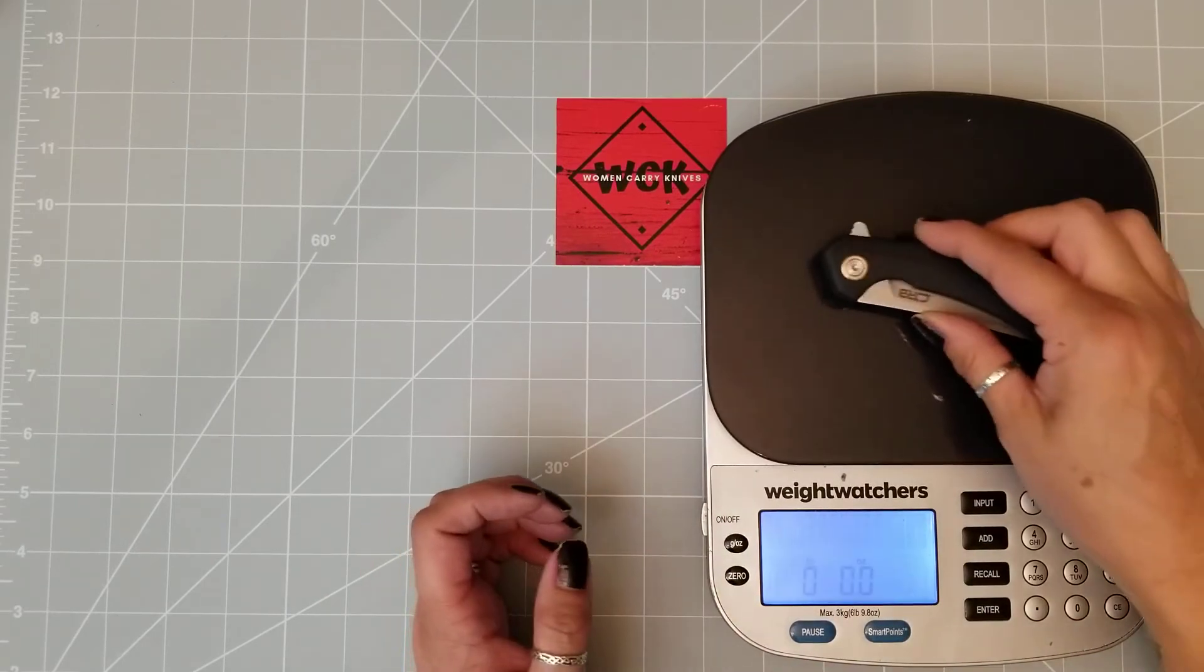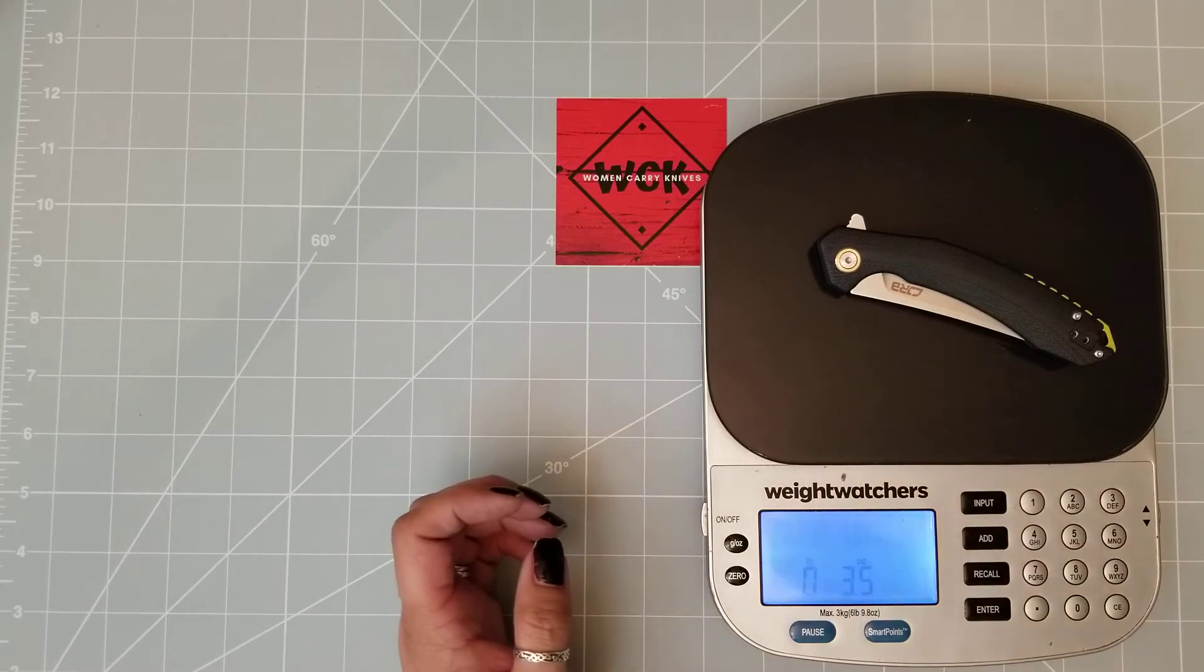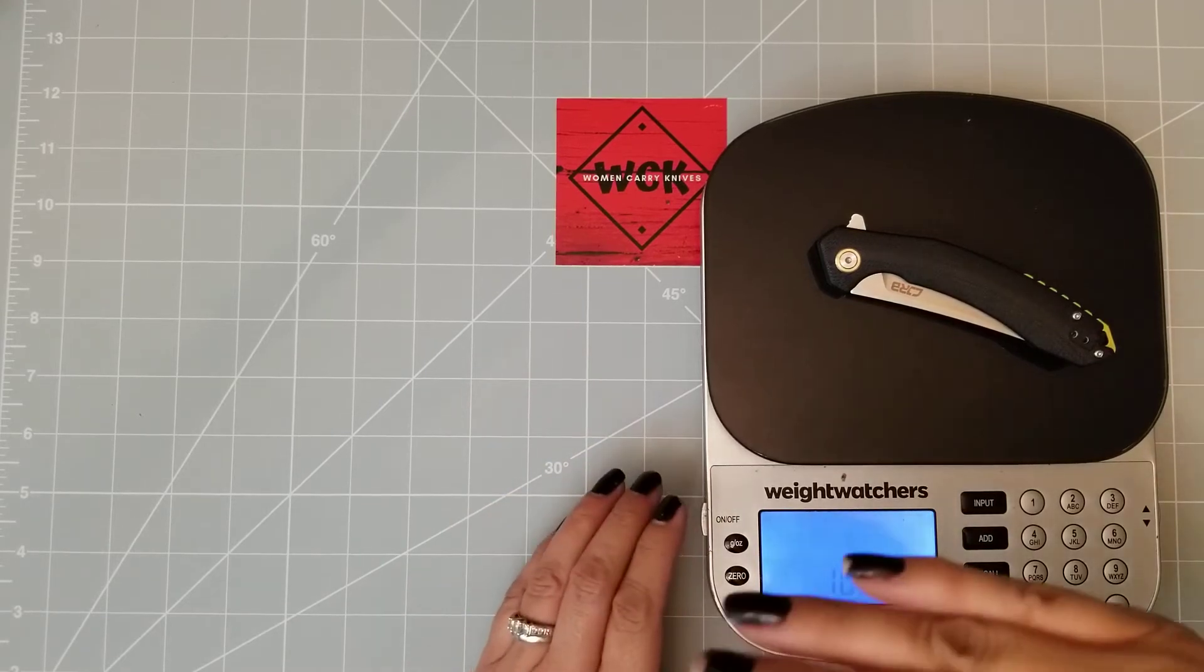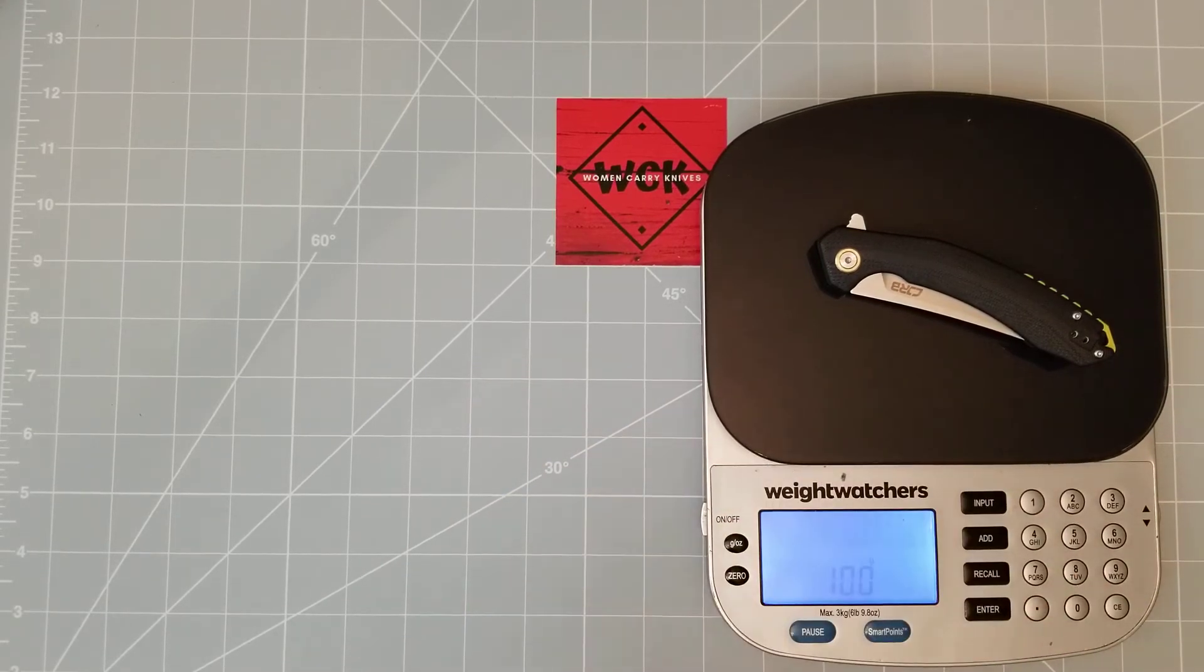So we are looking at in ounces, which you guys probably can't see that. There we go. In ounces we are talking about three and a half ounces, or for those of you that like grams, we are talking about 100 grams.